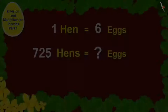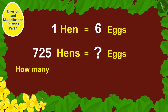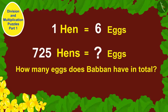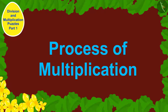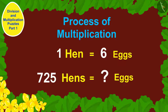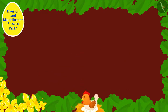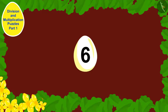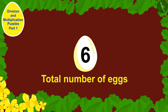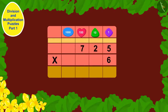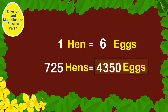Children, can you tell how many eggs Babban has in total? If you wish to, you can pause the video and think of the answer. We have to use the process of multiplication to find the total number of eggs. Each hen has laid 6 eggs, so to find the total number of eggs we will multiply 6 by 725. Babban has a total of 4350 eggs.